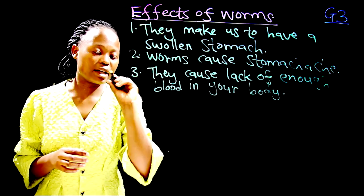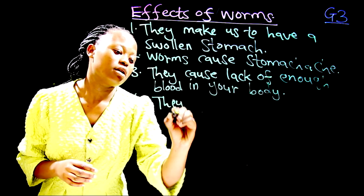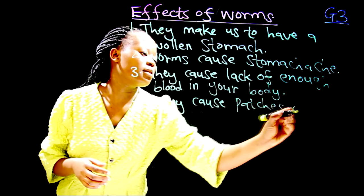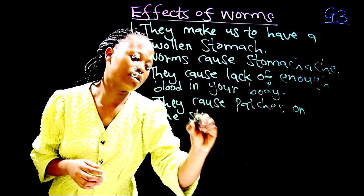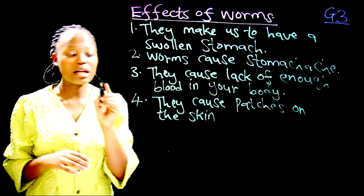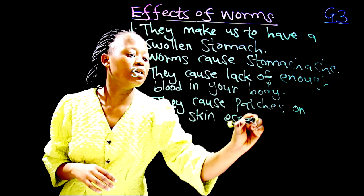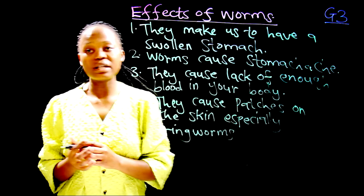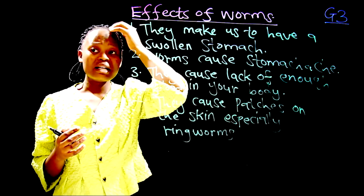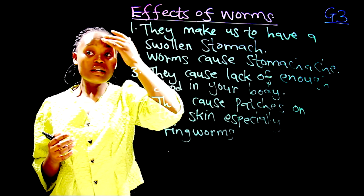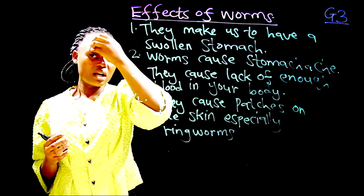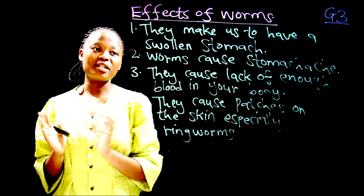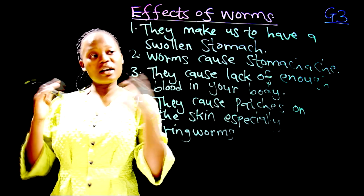Effect number four: worms cause patches on the skin — especially ringworms. Ringworms cause patches on your head and sometimes on your forehead. They are not good friends; they are harmful and dangerous. They make us have stomach pain, lack enough blood, and cause skin patches.